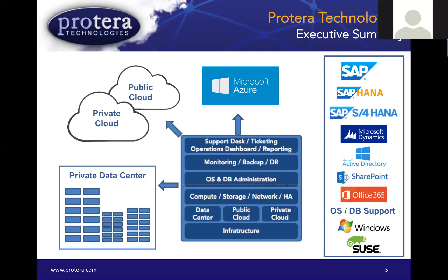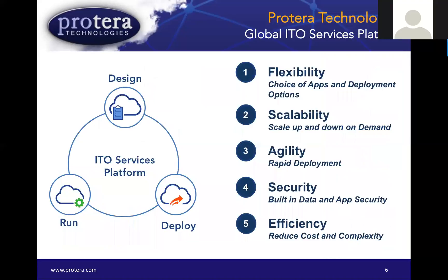Within the IaaS structure, we provide the network, storage, and compute, and administer all of those areas. It's abstracted from the customer so they don't have to worry about how to provision systems or inter-network on-premise systems to the cloud. We also take advantage of our innovation, automation, and monitoring solutions to ensure best-in-class operating system and database administration, as well as application support.